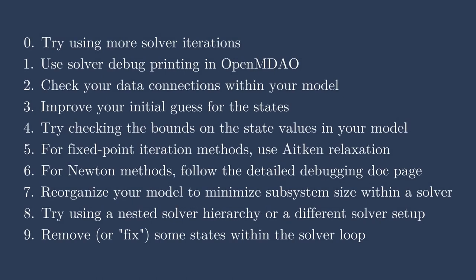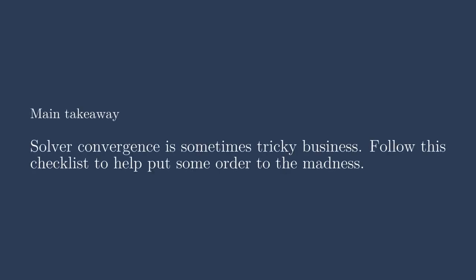These tips are not the end-all be-all, but they're a great way to start debugging your model. Every problem is different, so some may work and some may not. Solver convergence is sometimes tricky business — I can't remember a time it just worked out the first try. Follow this checklist, put some order to the madness, go through it step by step, and keep notes on what you tried. Keeping a log of what worked and what didn't is very powerful — six months later when you hit the same issue, you can look back at what resolved it. Let me know in the comments if other methods have worked well for you.